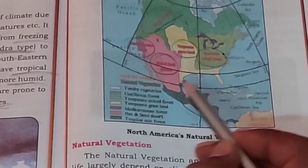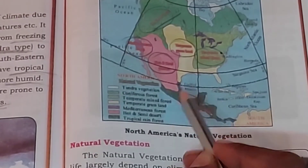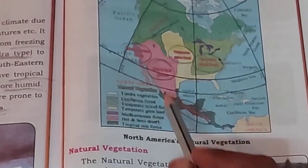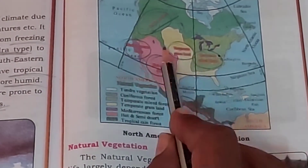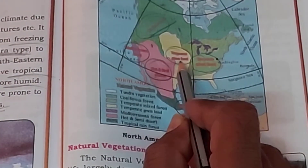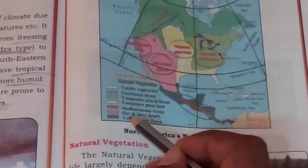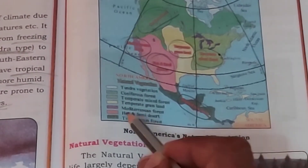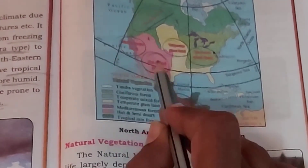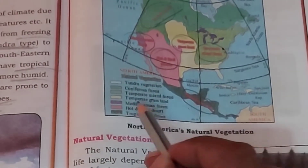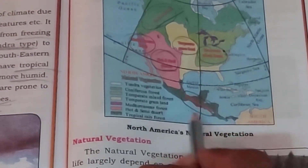The next colour is temperate mixed forest — the light green you see in this part. And next below that, the yellow colour is temperate grassland, where prairies will be found. That is between the Rockies and the Mississippi River in the USA. Then Mediterranean forest — look at the blue colour. The pink colour is hot and semi-desert. And the last one, dark green, is tropical rainforest.